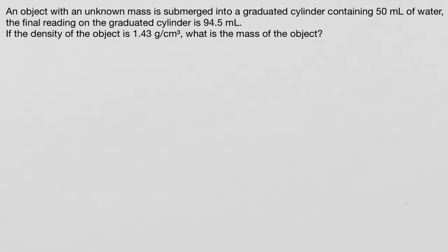An object with an unknown mass is submerged into a graduated cylinder containing 50 milliliters of water. The final reading on the graduated cylinder is 94.5 milliliters. If the density of the object is 1.43 grams per centimeter cubed, what is the mass of the object?